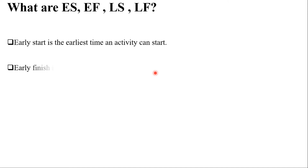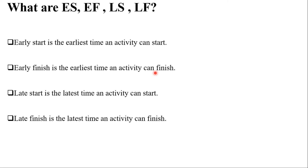The definitions are straightforward. The earliest start is the earliest time in which an activity can start — how early can you start an activity. The earliest finish time is the earliest time in which an activity can finish. The latest start time is the latest time an activity can start — how late can you start. And the latest finish time is the latest time in which an activity can finish.